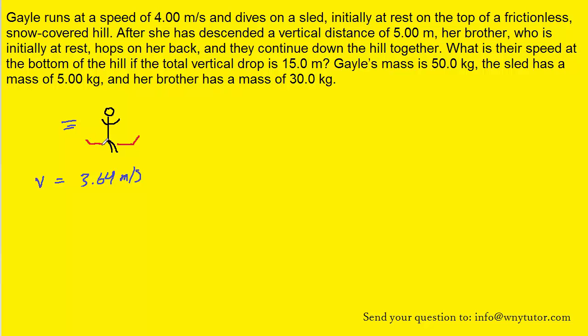Here Gale and the sled are coasting along going 3.64 meters per second, and then they descend a vertical distance of 5 meters. So let's show that in a picture. After Gale travels 5 meters down the hill, she's going to be traveling at a faster speed, and it's possible to find that speed by using the conservation of mechanical energy. Let's look at that formula.